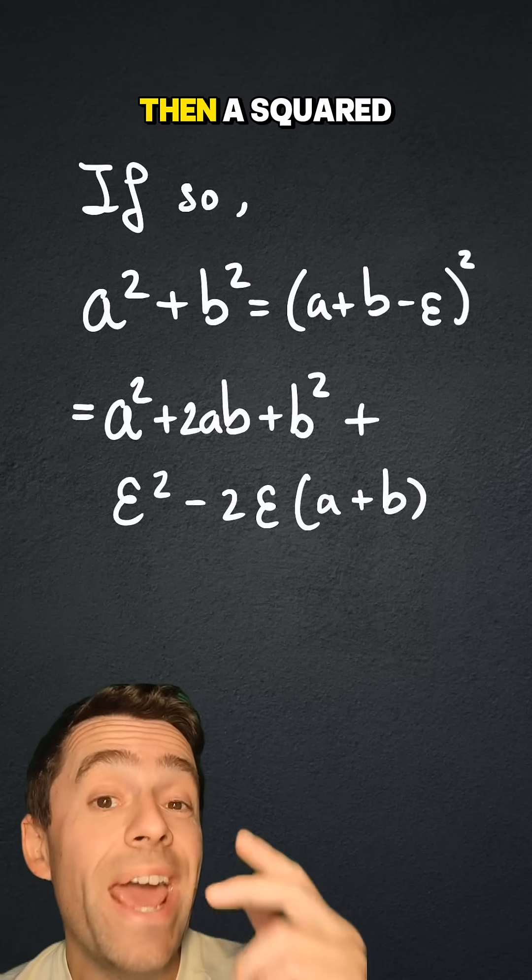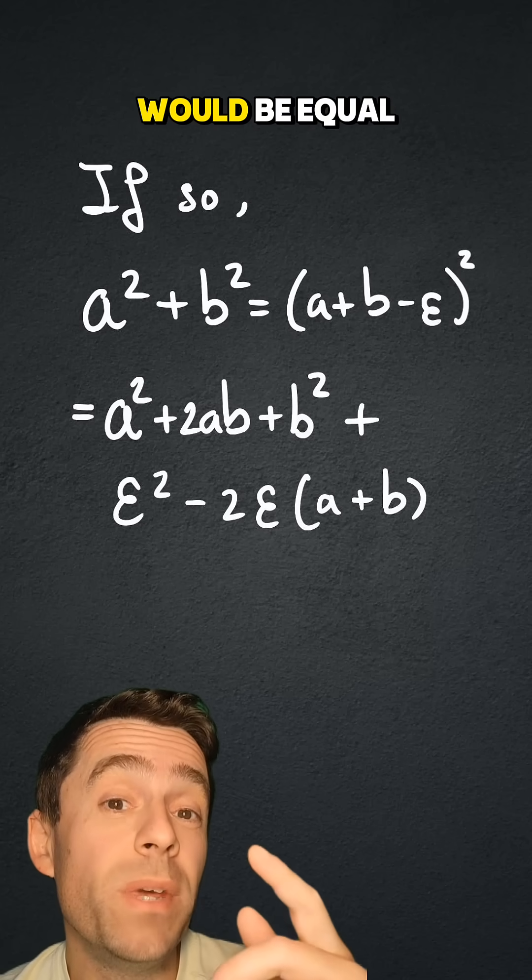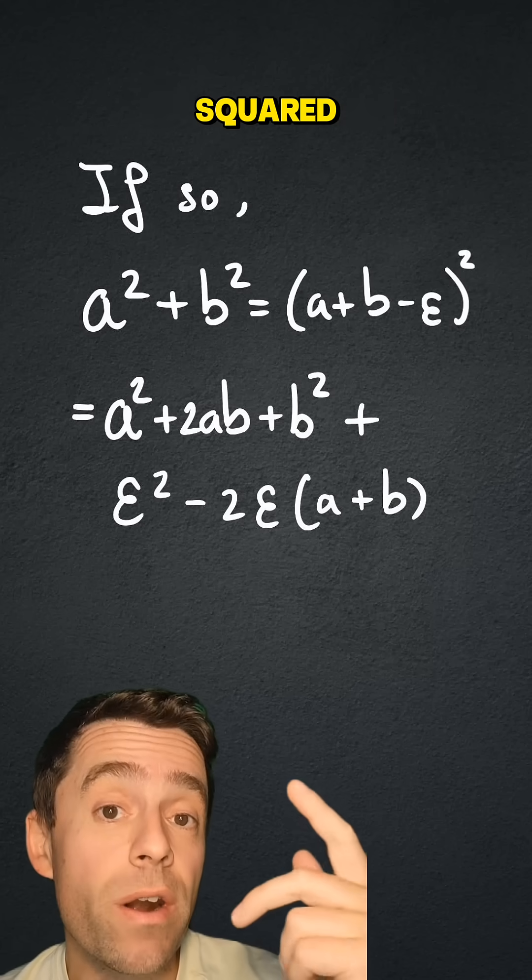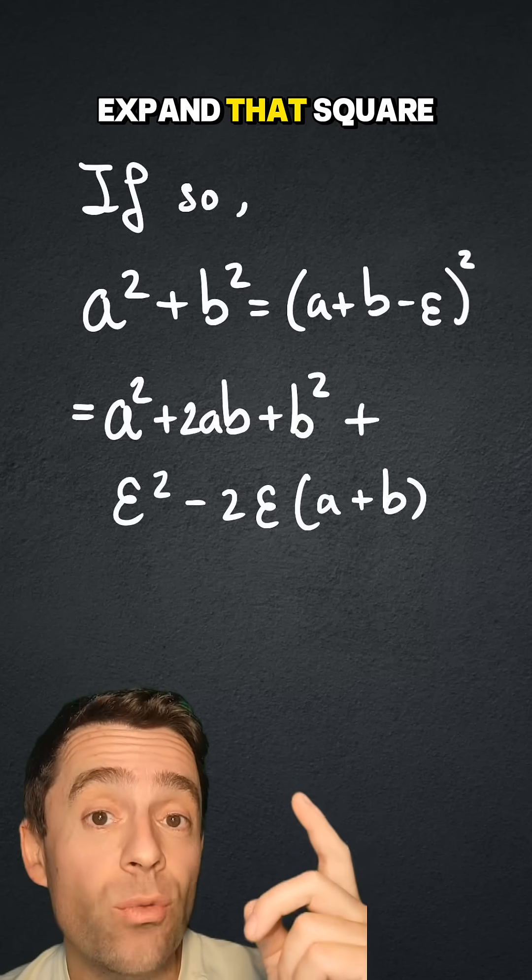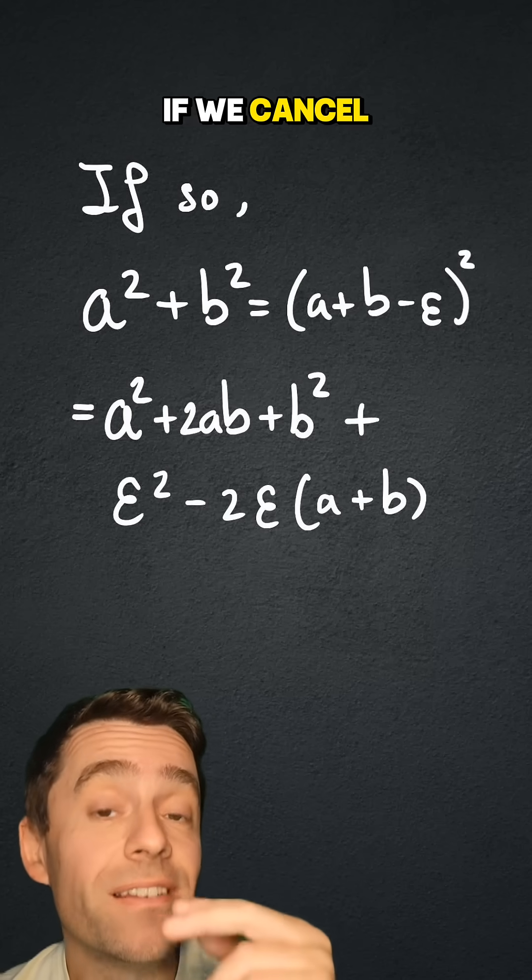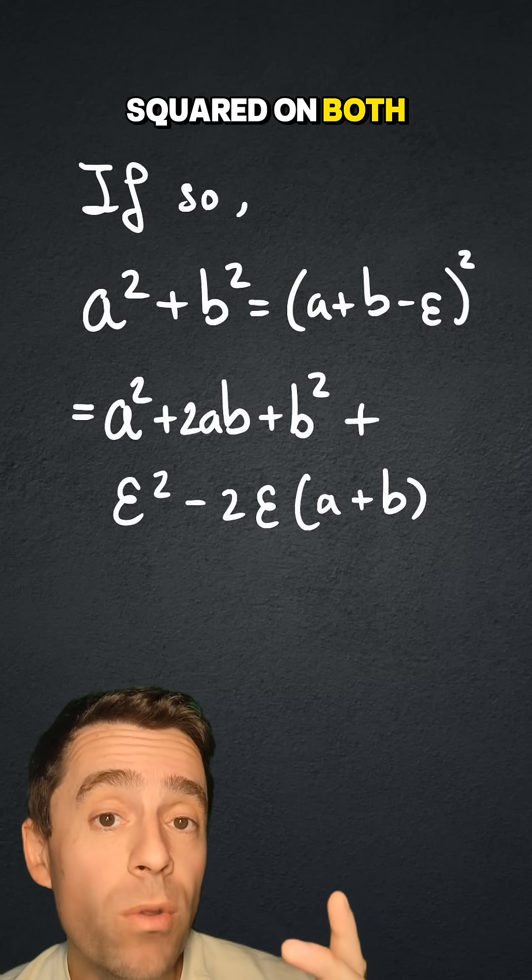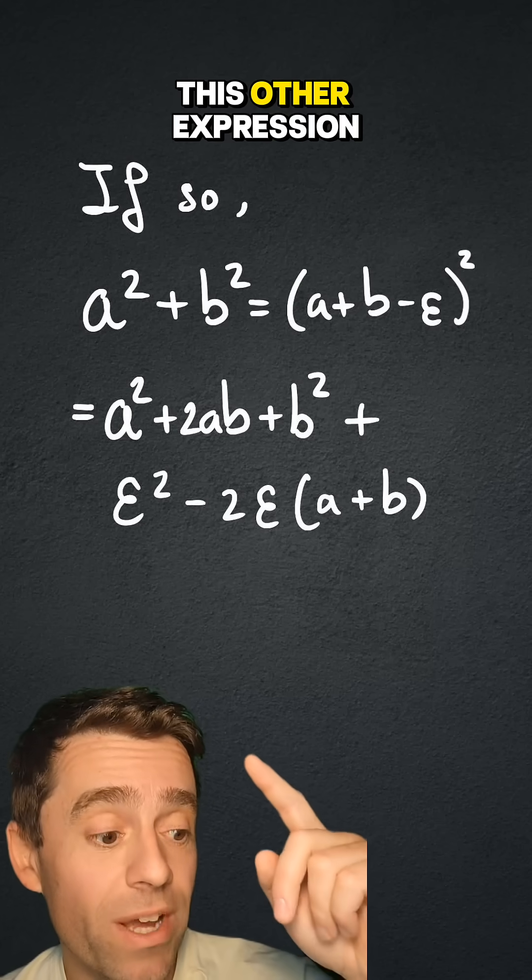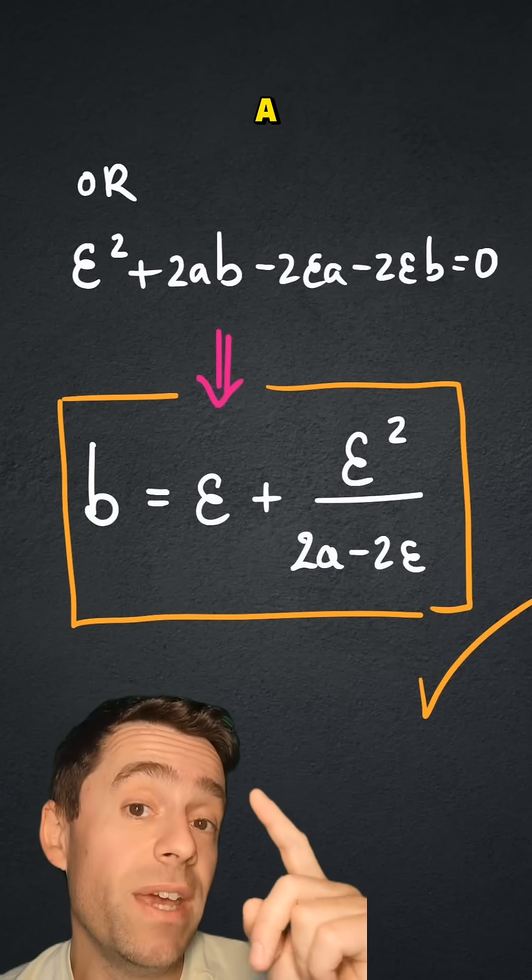If so, then a squared plus b squared would be equal to a plus b minus epsilon squared, and if you expand that square, then you get another expression in a, b, and epsilon. If we cancel the a squared and the b squared on both sides, I get this other expression in terms of a, b, and epsilon.